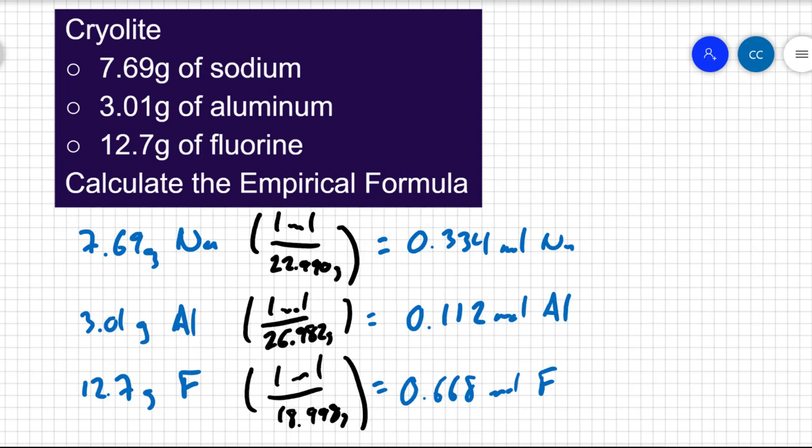All right. So now I know how many moles there are. To find an empirical formula, I want to find the simplest ratio. Well, to find the simplest ratio, we're going to want to put these compounds in the terms of one of these elements. And the simplest way to do this is to put it in terms of the least amount that you have. The least amount of an element I have here is the aluminum. I only have 0.112 moles of aluminum. So I'm going to set that to one.